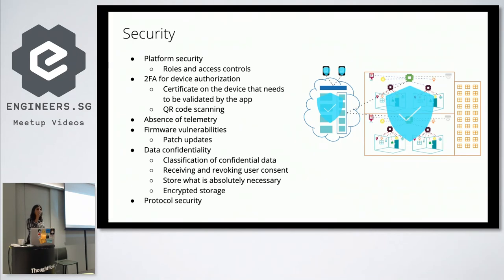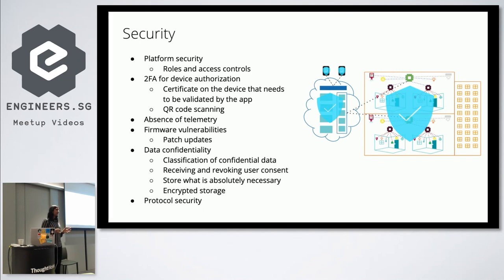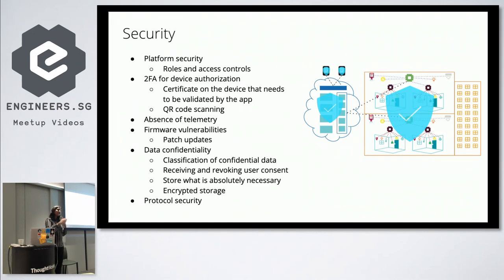Another significant use case was treating absence of telemetry as a security signal. If someone breaks into your house and physically destroys the device, it stops sending signals — so you'd never know. To handle this, if there was no telemetry for 3 consecutive pings (configurable), that would trigger an alert to the user. The user could then check the camera feed on their phone to decide if it was an actual threat. We also had escalation rules: if the user didn't respond, the alert would automatically escalate to the police.